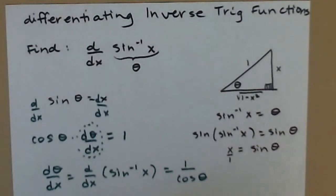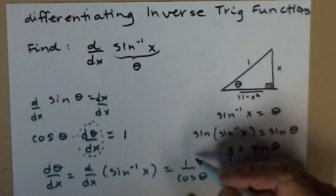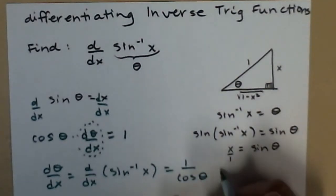I have 1 over the cosine of theta. We're almost there. So now I'm going to go up here to my triangle and I'm going to figure out what ratio leads to 1 over cosine.